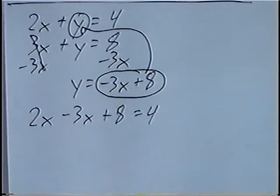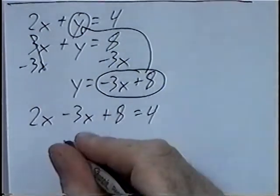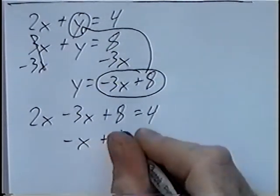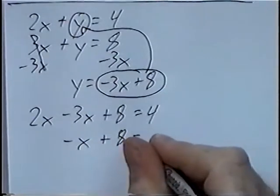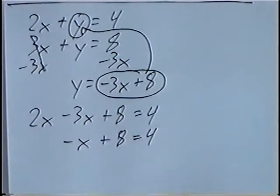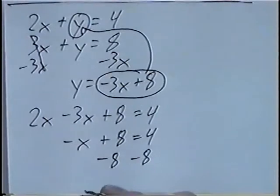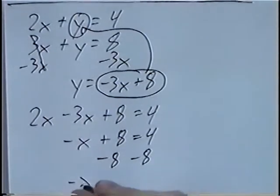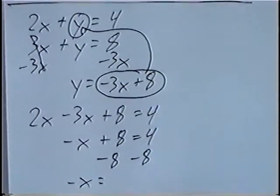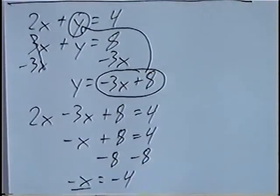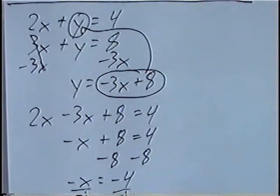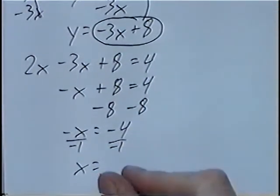Solving this question: 2x minus 3x will be negative x plus 8 equals 4. Subtracting 8, negative x equals negative 4. And dividing by negative 1, x would equal positive 4.